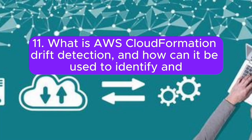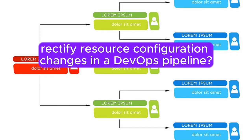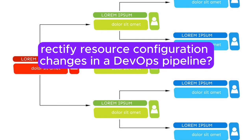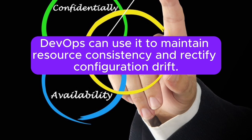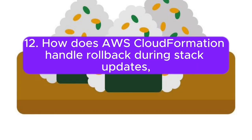Question 11: What is AWS CloudFormation drift detection, and how can it be used to identify and rectify resource configuration changes in a DevOps pipeline? Answer: Drift detection helps identify differences between the desired and actual stack resources. DevOps can use it to maintain resource consistency and rectify configuration drift.